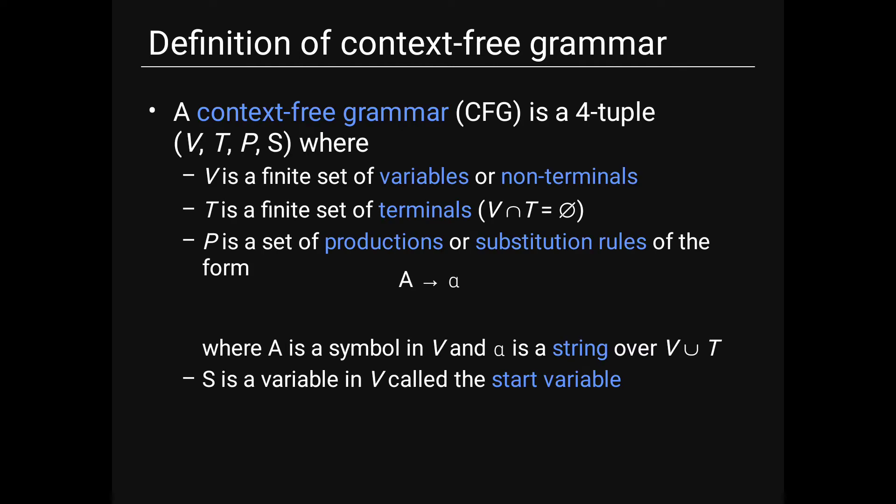A context-free grammar is a 4-tuple (V, T, P, S) where V is a finite set of variables (non-terminals), T is a finite set of terminals with V ∩ T = ∅, P is the set of productions or substitution rules of the form A → α where A is a symbol in V and α is a string over V ∪ T, and S is the start variable in V.